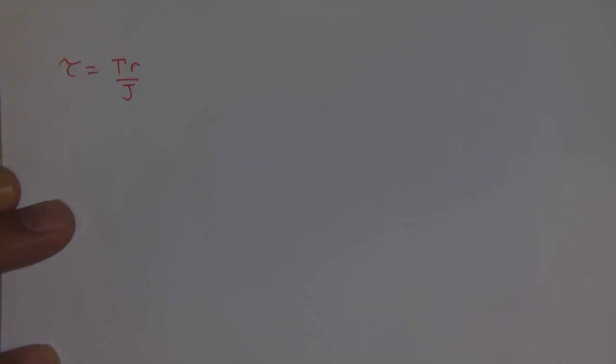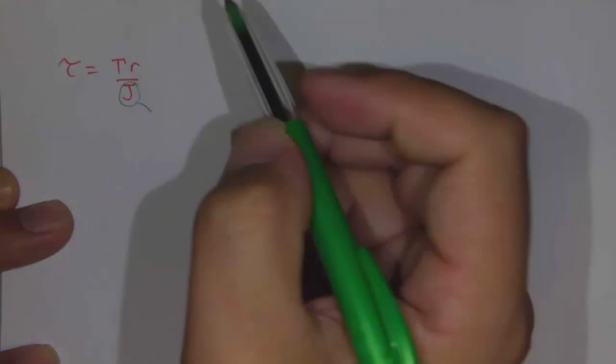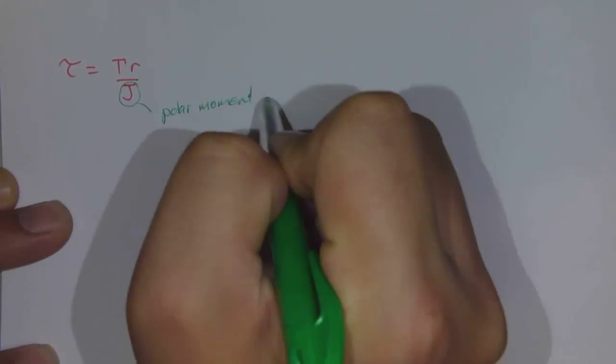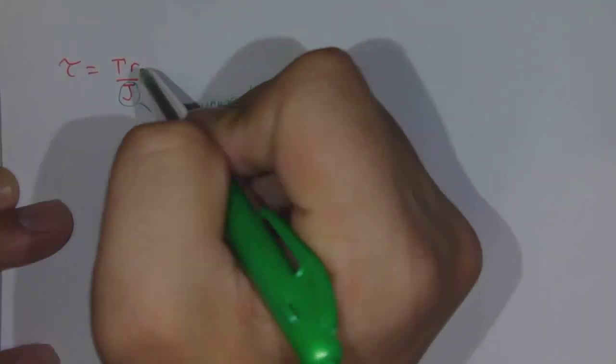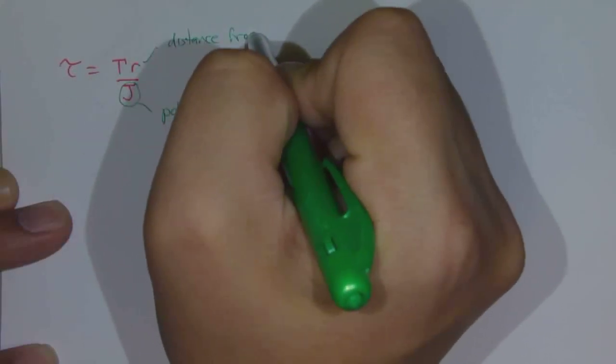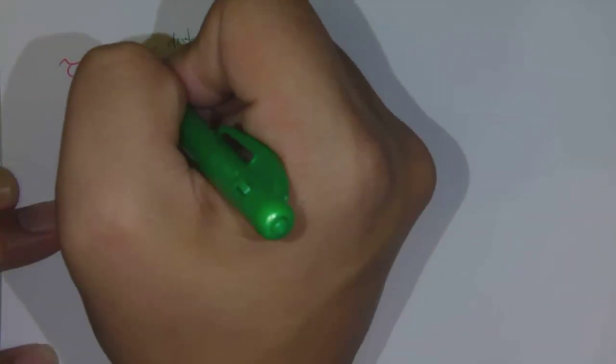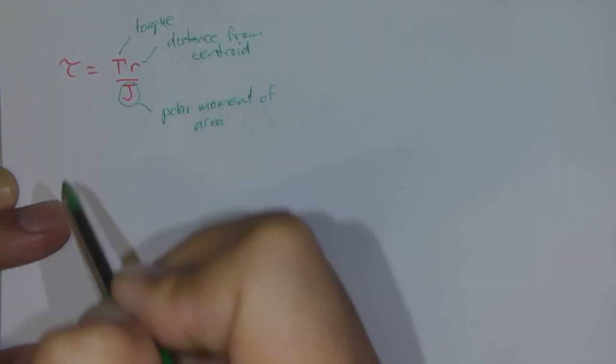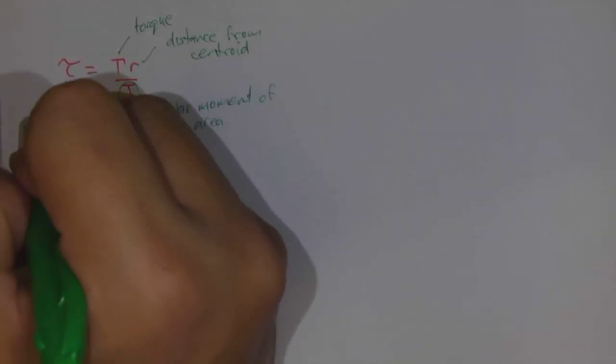Now in this relationship we have J, which is your polar moment of area. We have R, which is the distance from the centroid. T, which is your torque, measured in Newton meters. And then this value here, which is your stress, your shear stress.